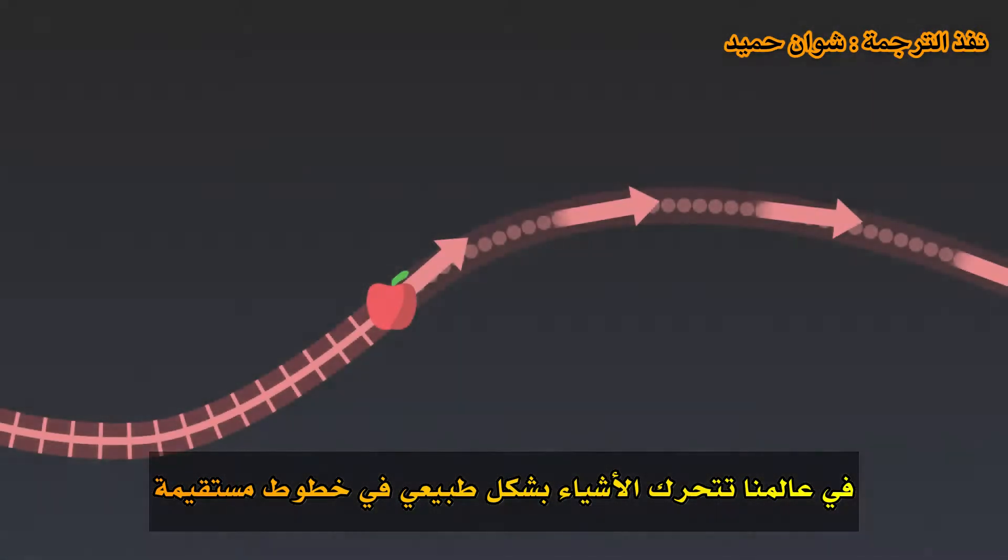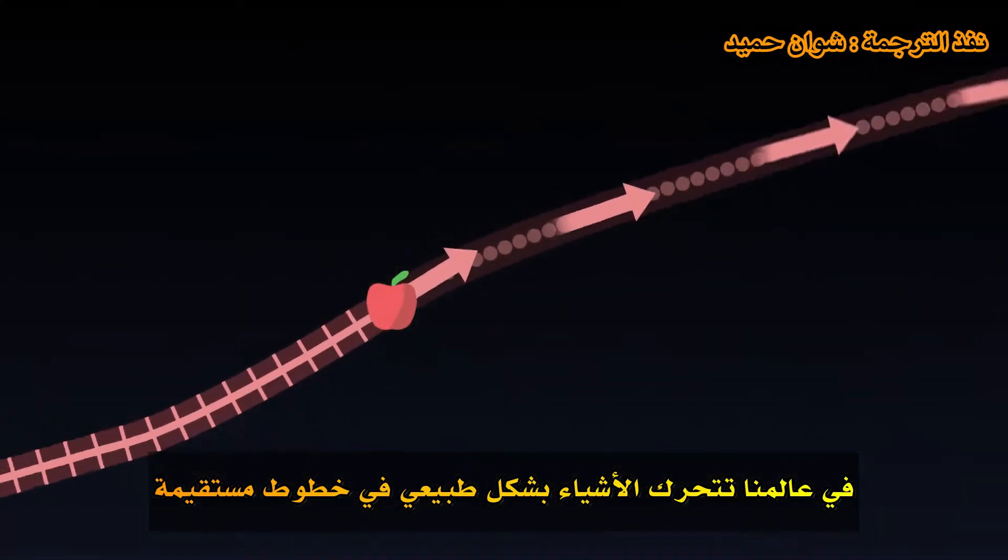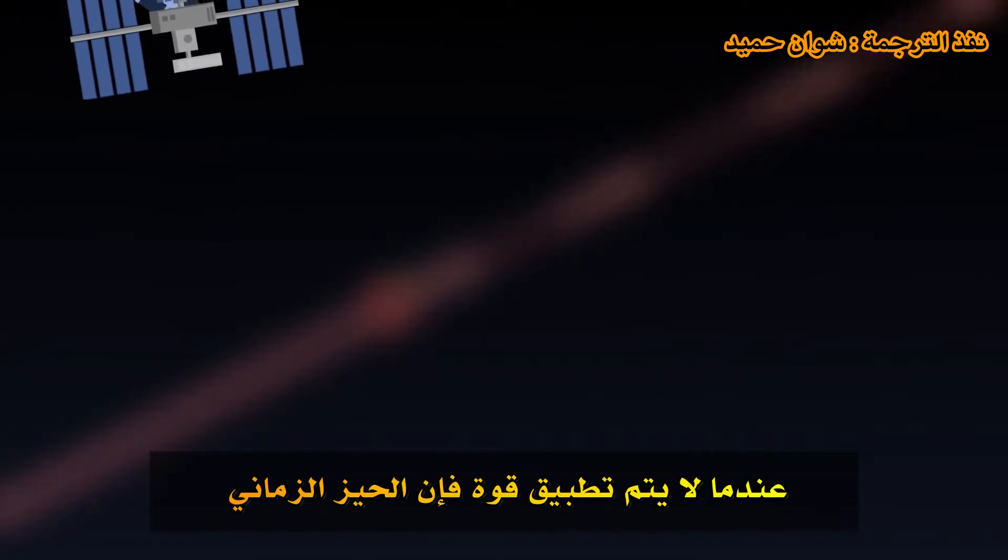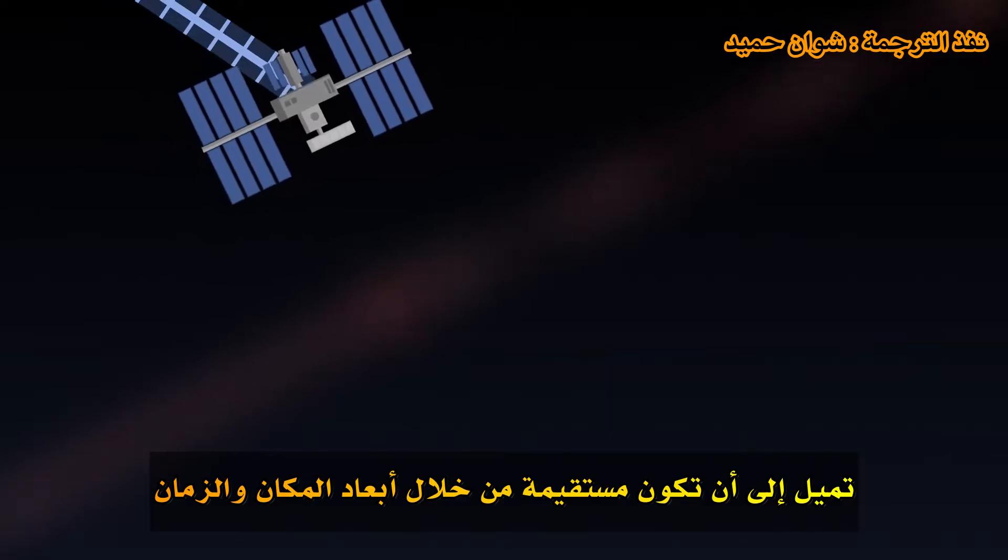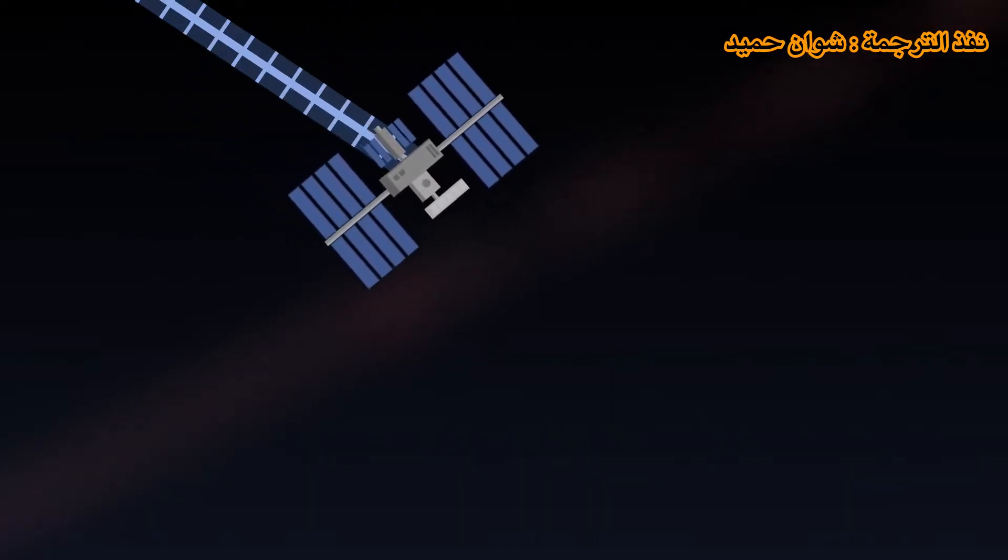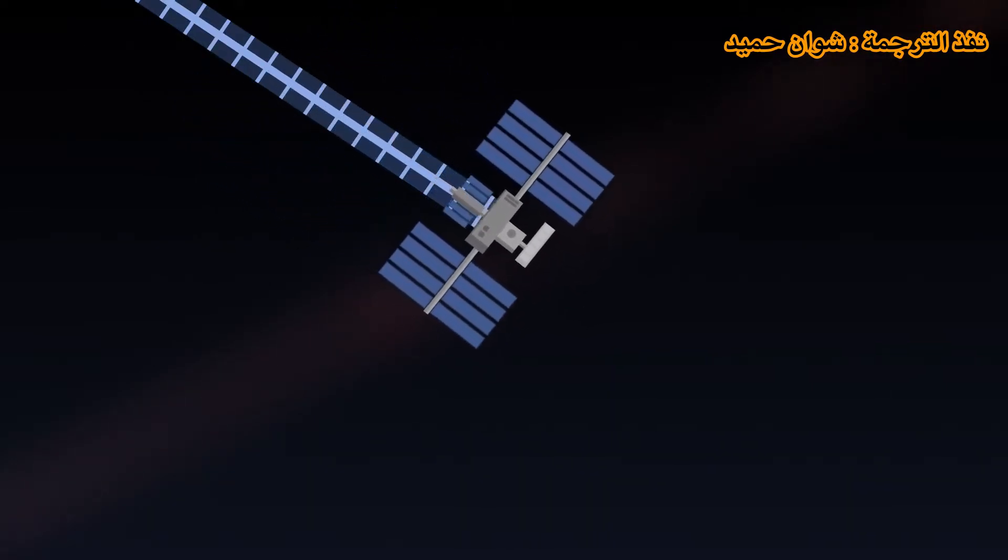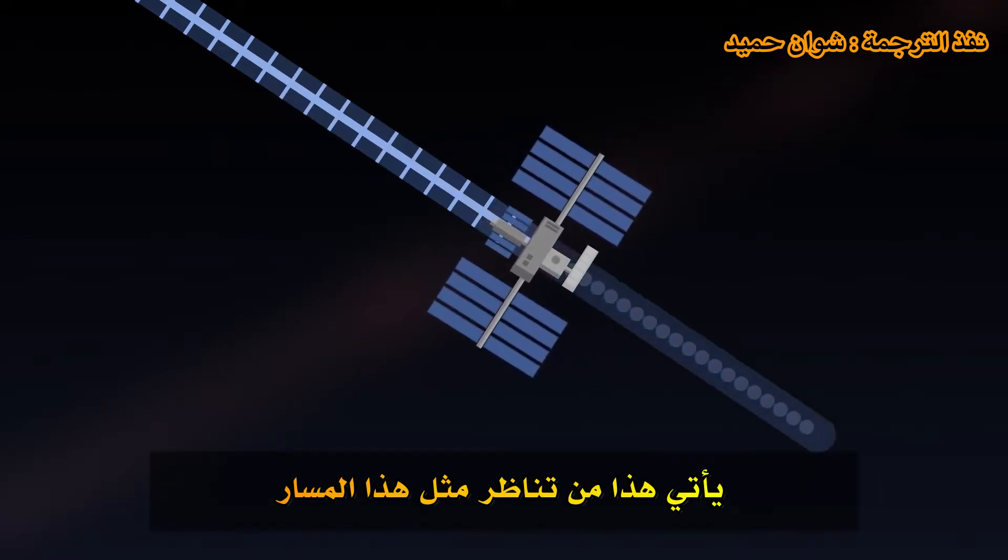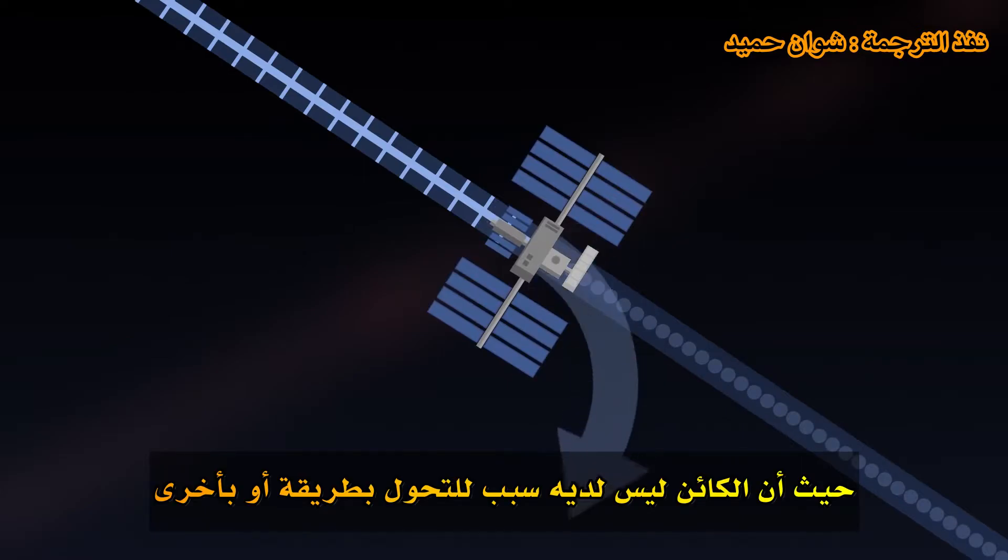In our universe, objects naturally move in straight lines. When no force is applied, world lines tend to be straight through the dimensions of space and time. This comes from the symmetry of such a trajectory. An object has no reason to turn one way or the other.